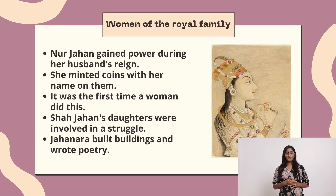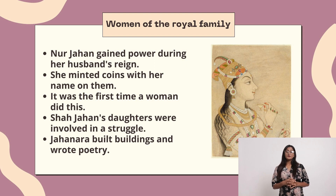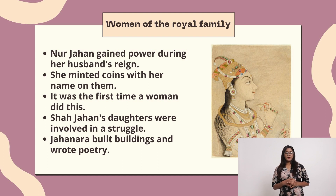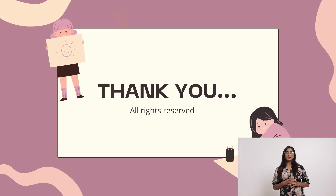Women of the Royal Family: Noor Jahan gained power during her husband's reign. She minted coins with her name on them — the first time a woman did this. Shah Jahan's daughters were involved in a power struggle. Jahanara built buildings and wrote poetry. Thank you.